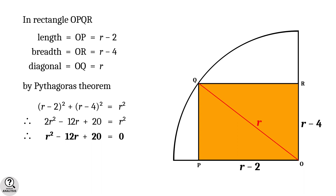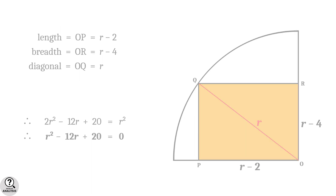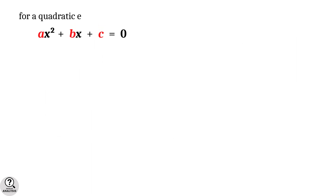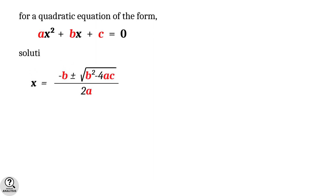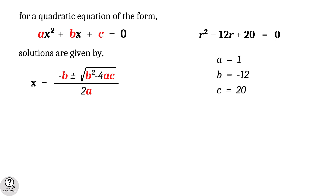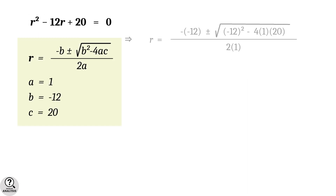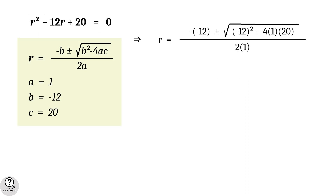Now we have to solve this equation. For a general quadratic equation of the form AX squared plus BX plus C equals 0, the solutions are given by X equals minus B plus or minus square root of B squared minus 4AC, all divided by 2A. Here the equation is R squared minus 12R plus 20 equals 0, so A equals 1, B equals minus 12, and C equals 20. Substituting these values into the quadratic formula and simplifying: